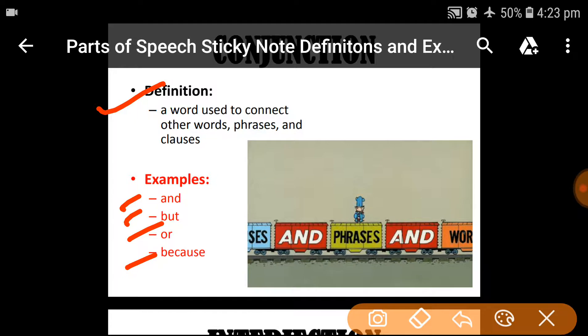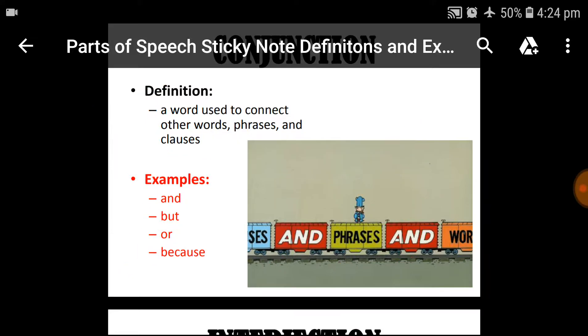Here you can see this one is a train. And we are joining its compartment with the and, phrases, and words. We are using and to join the two different compartments. So, conjunction is used to join the words, phrases or clauses.